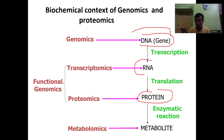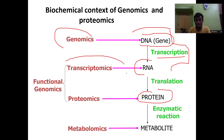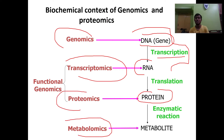Most of us are familiar with this entire process. The process from DNA to RNA is called transcription, and from RNA to protein is called translation. From protein, through enzymatic or other reactions, we can extract the metabolites. The corresponding fields are genomics, transcriptomics, proteomics, and metabolomics — these are the biochemical contexts. Functional genomics includes transcriptomics and proteomics.